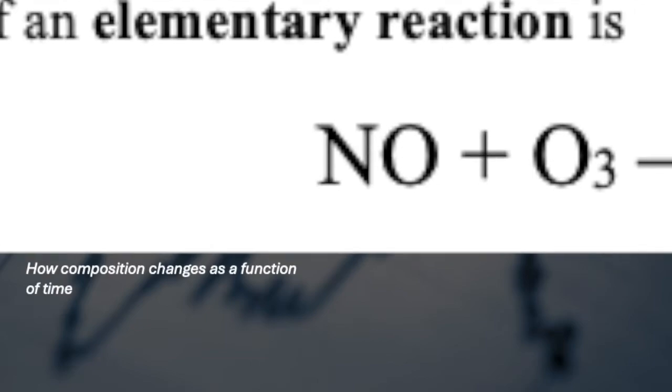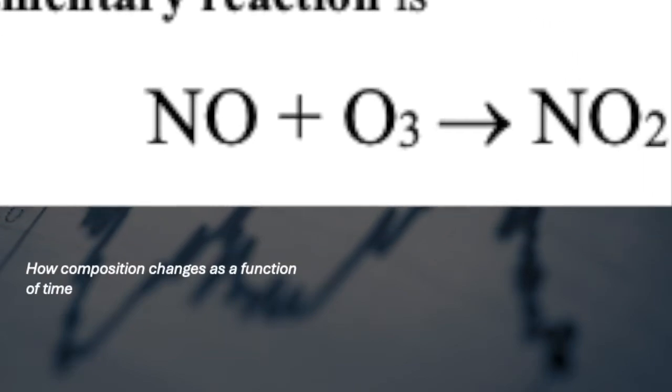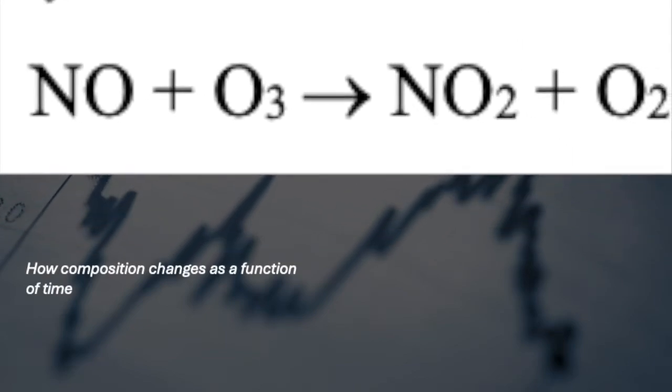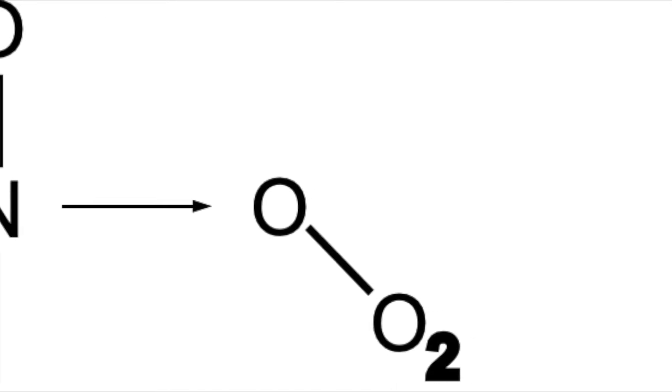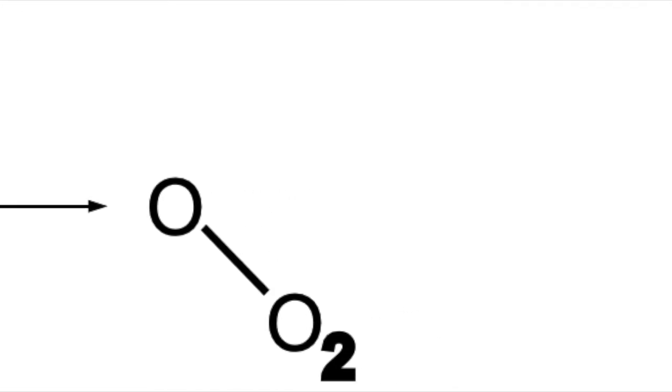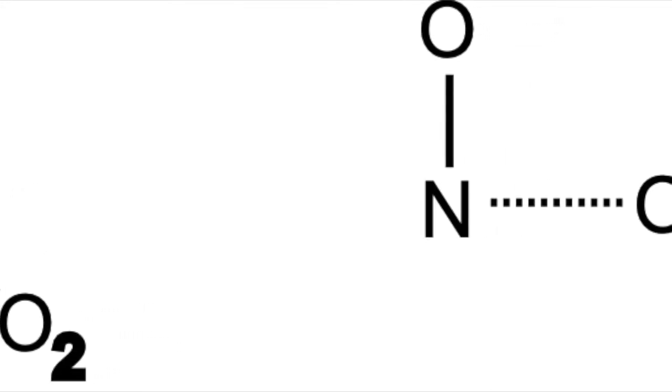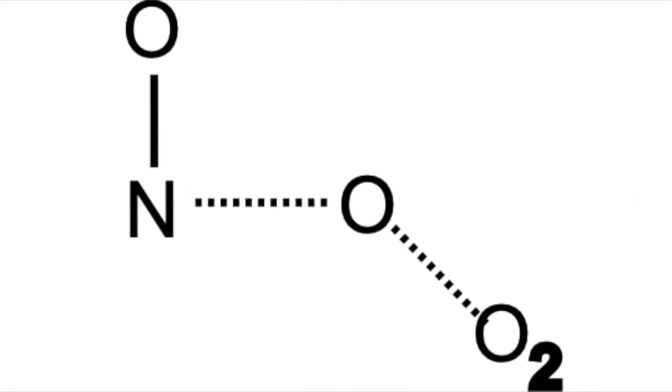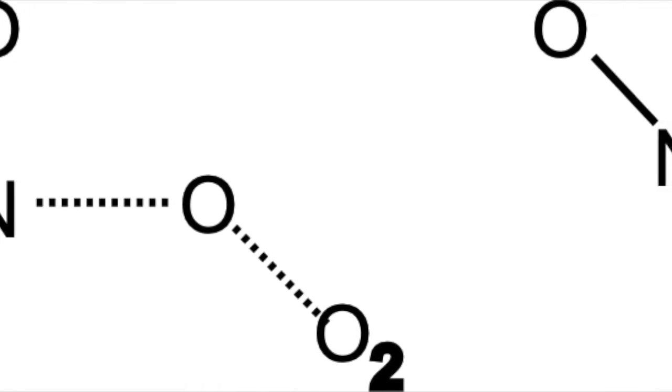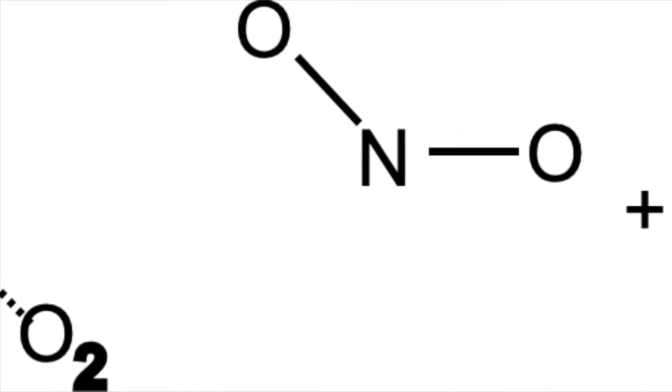An example of an elementary reaction is that of nitric oxide plus ozone to make NO2 plus O2. This reaction occurs when NO strikes ozone. A partial bond is formed between the nitrogen of the NO and one of the oxygen atoms in O3. Simultaneously, the bond of that oxygen atom with another oxygen atom in the ozone is starting to break.